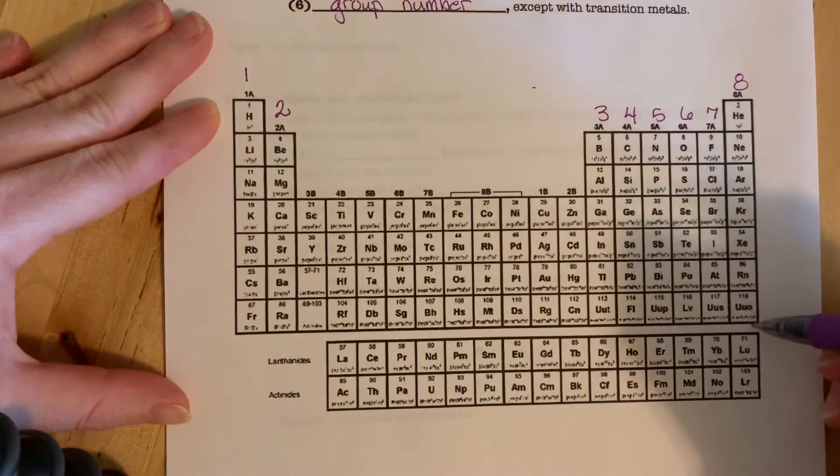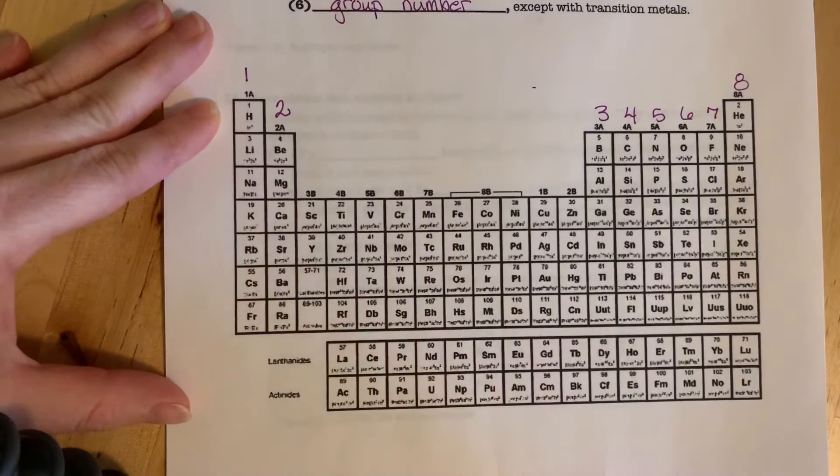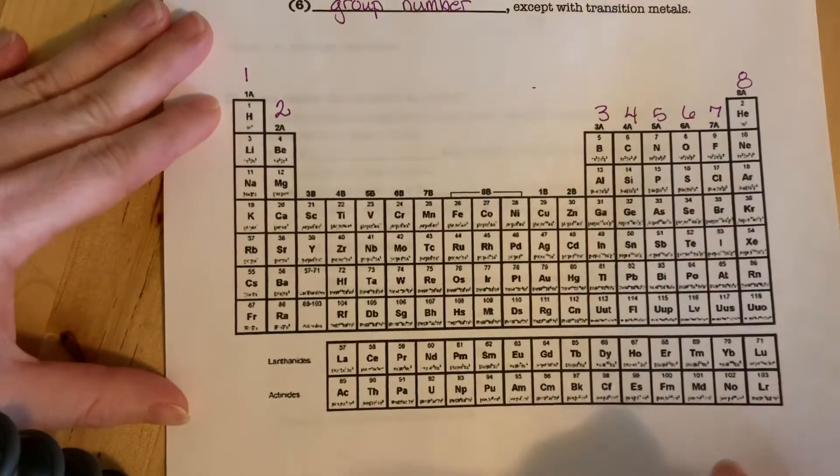Those in this column right here have eight electrons already, so they are perfectly stable by themselves. They don't really do much of anything since they don't actually have to bond with one another.